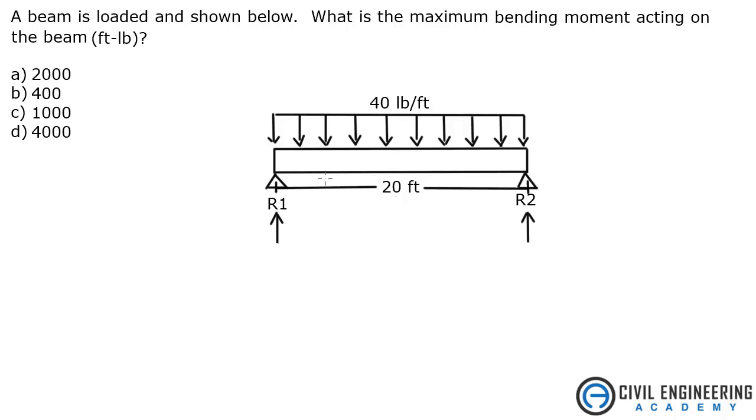So what we've got here is a distributed load. Let's go ahead and solve for the reactions. I'm going to take 40 pounds per foot and multiply that by 20 feet, which is the length. And it gives me 800 pounds acting right dead center. And by geometry, we know that each one of these is now 400 pounds. That's pretty simple.